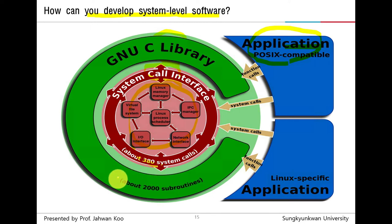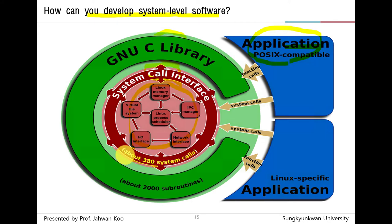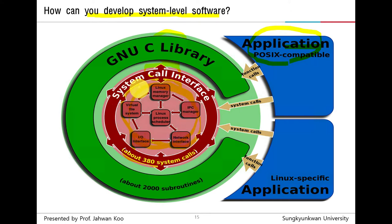Can you guess how many subroutines are there? The answer is about 2000 subroutines in the GNU C library. Can you guess how many system calls are there? The answer is about 380 system calls in the system call interface. Can you guess what is in the kernel within the system call interface? The answer is the kernel — that is the core part of Linux operating systems.